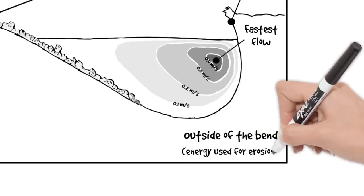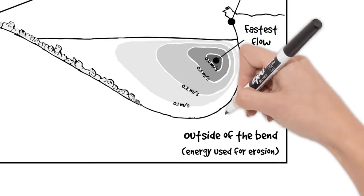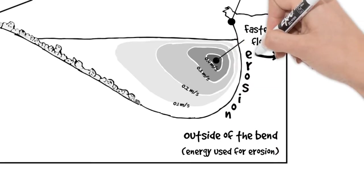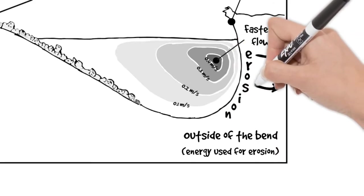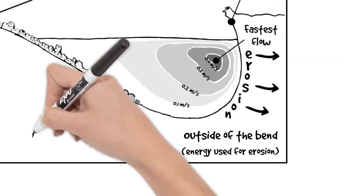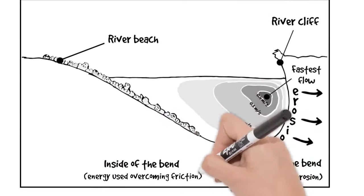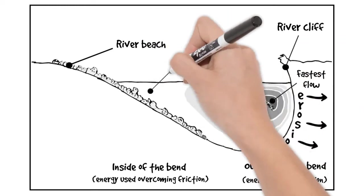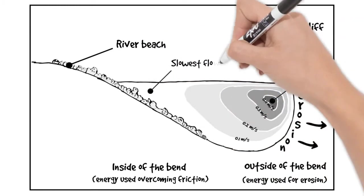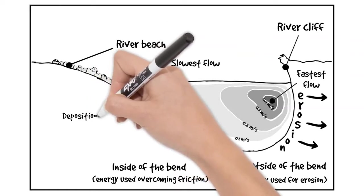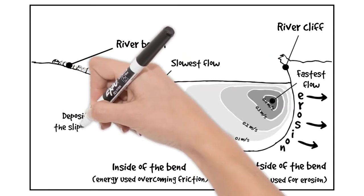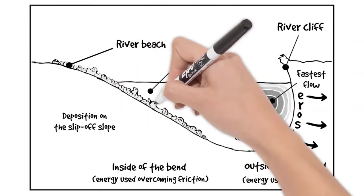Of course that means on the outside of the bend there's more energy and that energy is used for erosion. We can show the erosion here with arrows eroding the meander outwards and downwards. Whereas on the inside of the bend energy is used overcoming friction and therefore there's less energy to transport bed load and some of it is deposited on the slip-off slope. That's where the slowest flow is.